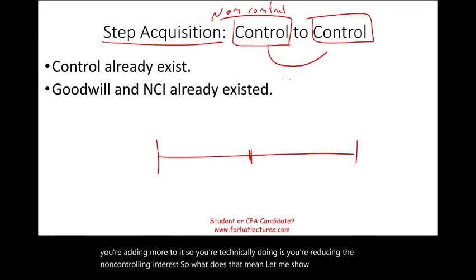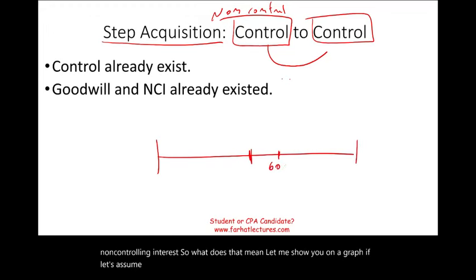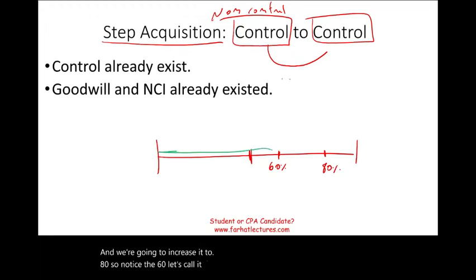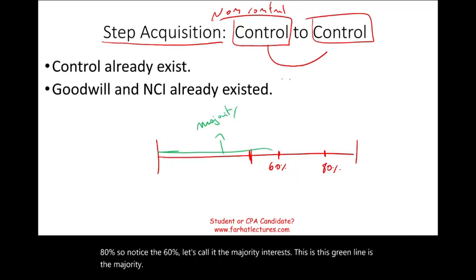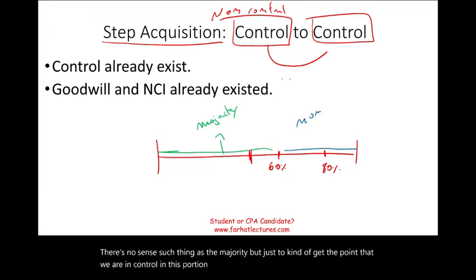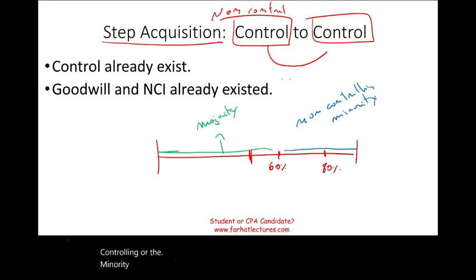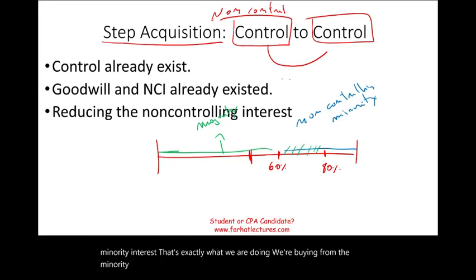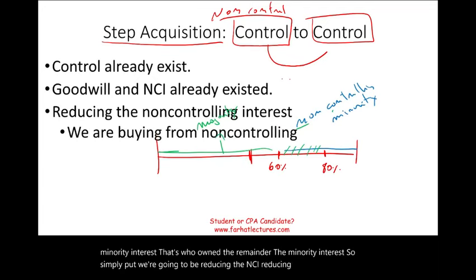Let me show you on a graph. Let's assume we started at 60% and we're going to increase it to 80%. The 60% — let's call it the majority interest — this green line is the majority. There's no such thing as the majority, but just to get the point that we are in control. This portion here is the non-controlling or minority interest. All what we're doing is taking away a portion of the minority interest — we're buying from the minority interest, who owns the remainder. Simply put, we're going to be reducing the NCI.